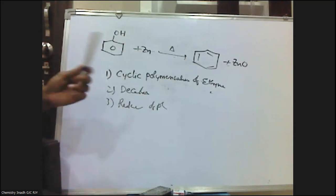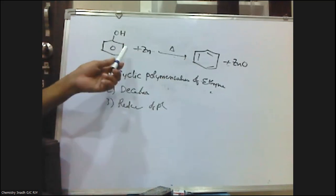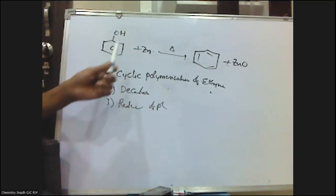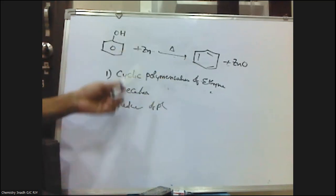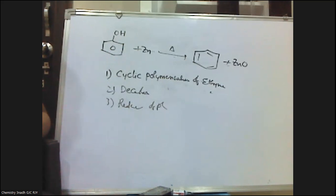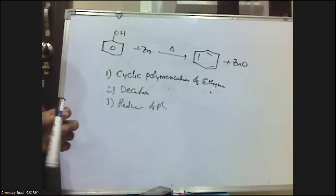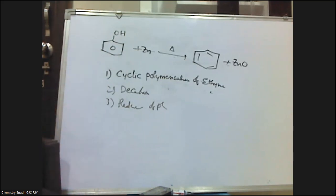These are the three methods for the preparation of benzene: first, cyclic polymerization of acetylene; second, decarboxylation of sodium salts of benzoic acid with soda lime; and third, reduction of phenol by passing its vapors over heated zinc. Thank you for watching Krenad Chemistry Classes. Please like the video, share, and subscribe to the channel.